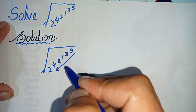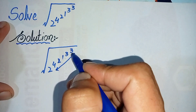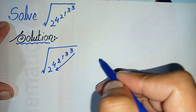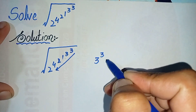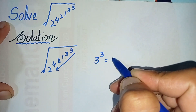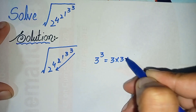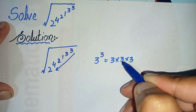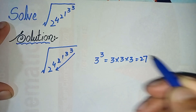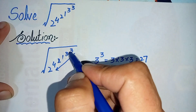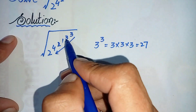First of all, we will simplify 3 raised to power 3. Since 3 raised to power 3 is the same as multiplying 3 three times: 3 times 3 is 9, and 9 times 3 is 27. So 3 raised to power 3 equals 27.